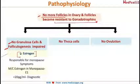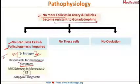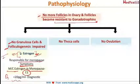Because the follicles are not growing, they will not release estrogen, leading to decreased estrogen levels. It is because of this decrease in estrogen that all menopausal symptoms occur. Whatever estrogen remains in menopausal females is in the form of estrone, the most common estrogen in the menopausal period. Estrogen values less than 20 picogram per ml are diagnostic of menopause.